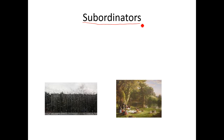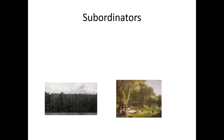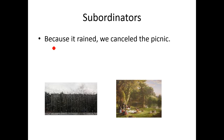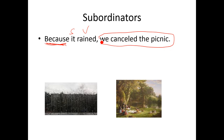Now we're going to look at some subordinators, or subordinating conjunctions, we can use to show a cause and effect relationship. First of all, there's 'because' — when it's by itself, not with 'of.' So when it's 'because,' it's followed by a subject and verb, and then a main clause. Because it rained, we canceled the picnic. When 'because' is at the beginning of a sentence, I need a comma after that part of the sentence.